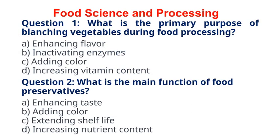Question 1. What is the primary purpose of blanching vegetables during food processing? A. Enhancing Flavor B. Inactivating Enzymes C. Adding Color D. Increasing Vitamin Content. The correct answer to question 1 is option B. Inactivating Enzymes. Explanation: blanching helps inactivate enzymes in vegetables, preventing deterioration of color, flavor, and nutritional quality during storage.